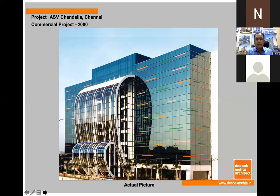This is another building we have done in Chennai. It was abutting a 200-feet wide road. How to create an icon and make a statement on a beautiful road? We tried a 108-feet high atrium. This is the actual picture — you can see this 108-feet high atrium.